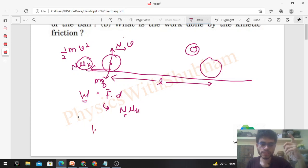Work energy theorem says that work done by all the forces that will be equal to change in kinetic energy. And change in kinetic energy kitna hai? K final minus K initial. K final kitna hai? 0. And K initial kitna hai? Half of M into V square.